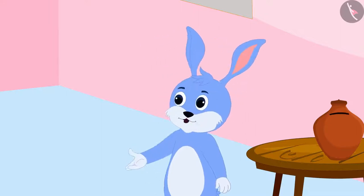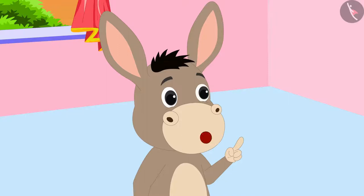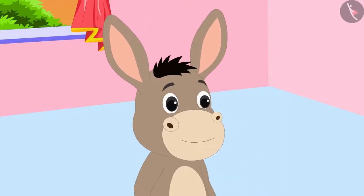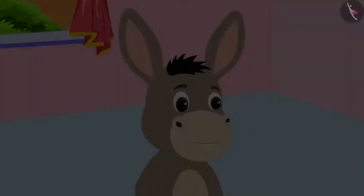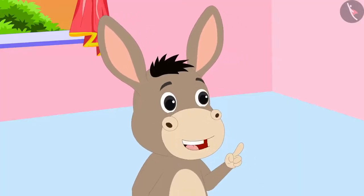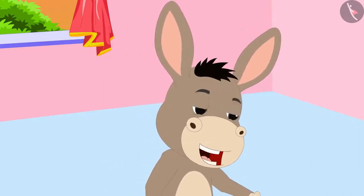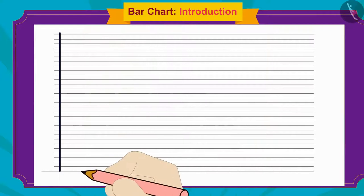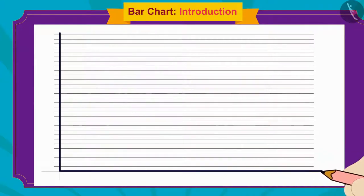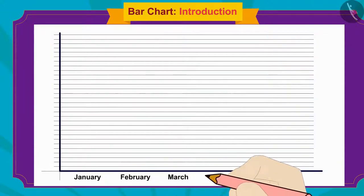Bunny didn't know how to find that out. Bholla said he could find it easily by creating a bar chart. Bunny asked what a bar chart was. Bholla explained that bar charts are a way of displaying information, and offered to teach Bunny how to make one. Bholla drew a vertical line and a horizontal line on a piece of paper.